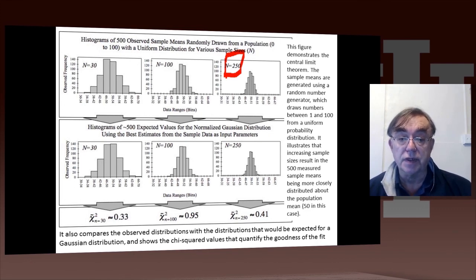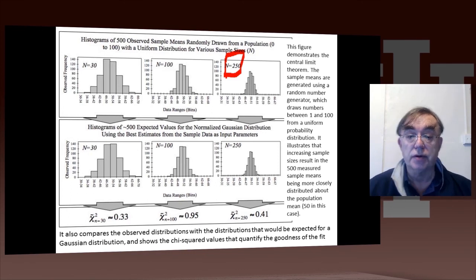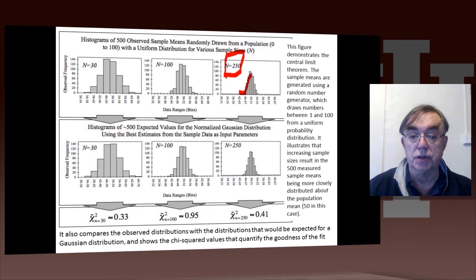Here we have 250 sample distributions. The mean is 50. And you can see that we have here a pretty good Gaussian distribution about that value of 50.